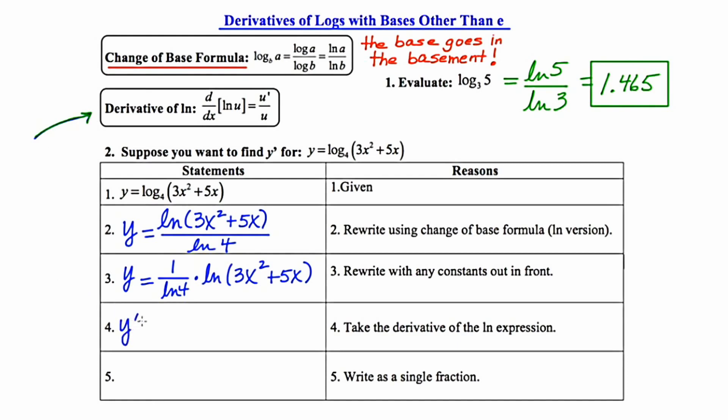Y prime, the constant is just going to be rewritten. The argument is going to go in the denominator of the natural log expression. And its derivative is going to go in the numerator, which would be 6x plus 5. And our concluding step is to write as a single fraction.